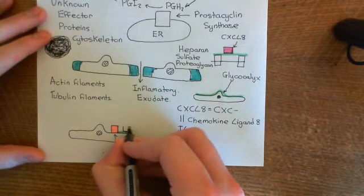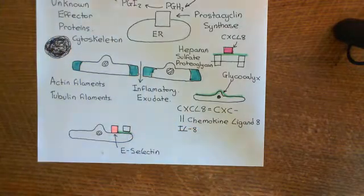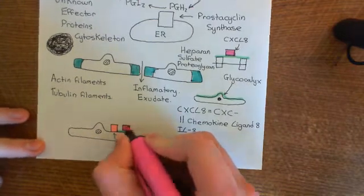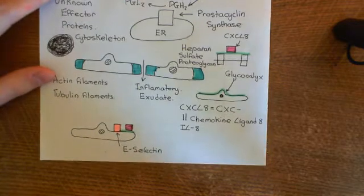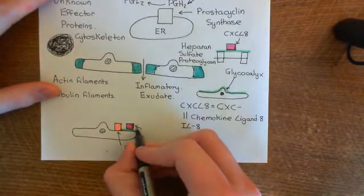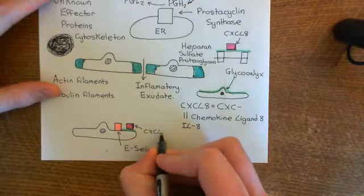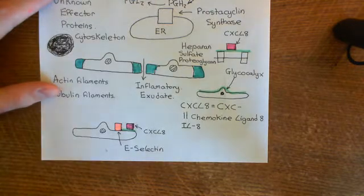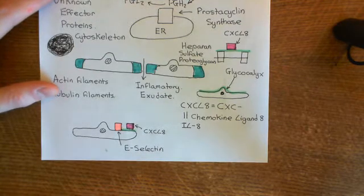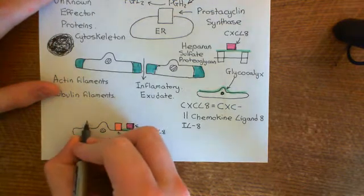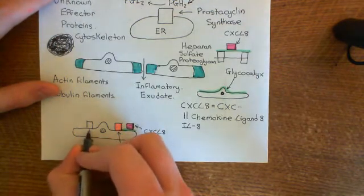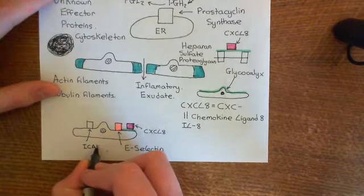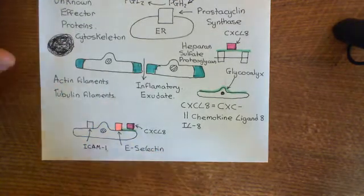This is going to lead to a very similar process that we saw in type 1 activation, but involving slightly different molecules. Here is CXCL8 on the surface of our heparan sulfate on the glycocalyx. There is another molecule that's going to be involved in the pathway for the extravasation of neutrophils, and this is the intercellular adhesion molecule 1, ICAM-1, that we saw earlier in type 1 activated endothelial cells. This is constitutively expressed on the surface of the endothelial cells.